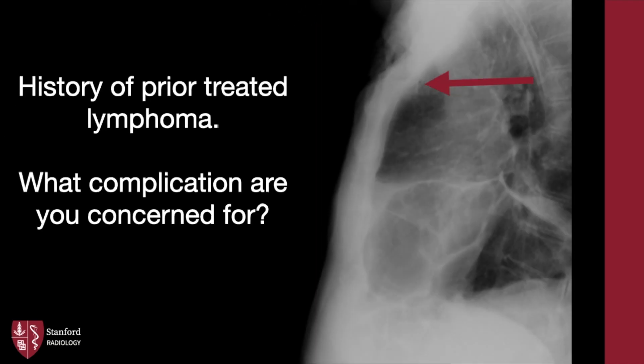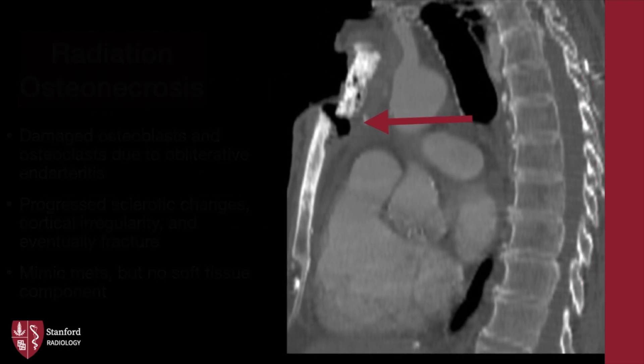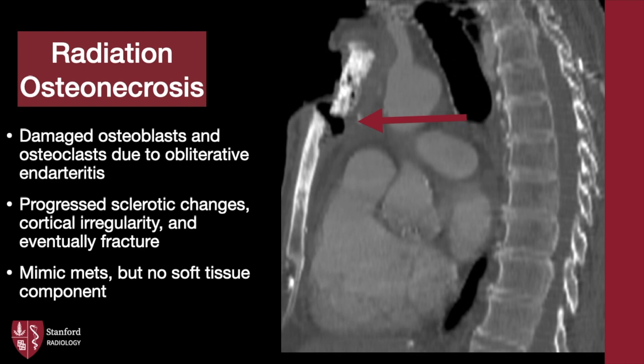Our next patient has a history of prior treated lymphoma. What complication are you concerned for? A sagittal CT shows ill-defined sclerosis with an anteriorly displaced fracture of the upper sternum. Patients treated with radiation may develop vascular compromise in bones within the port field. Radiation osteonecrosis may lead to progressive sclerotic changes, cortical irregularity, and eventually fractures. While the findings may mimic metastases, radiation osteonecrosis typically lacks the soft tissue component.